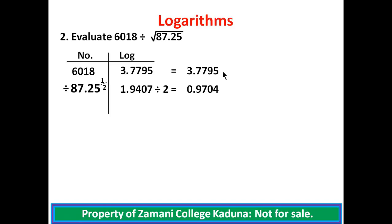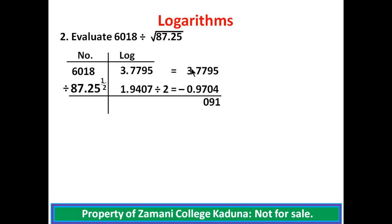Because of the division, we bring this in line and subtract. In our subtraction: 5 minus 4 gives 1; 9 minus 0 gives 9; 7 minus 7 gives 0; 7 minus 9 requires borrowing 1 from 3, giving 17, and 17 minus 9 gives 8. Place the decimal point. We are left with 2, and 2 minus 0 gives 2.